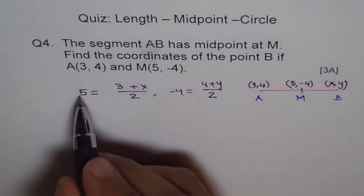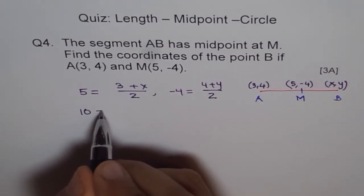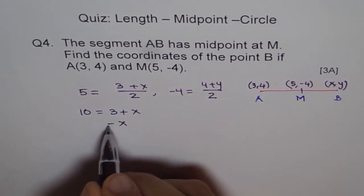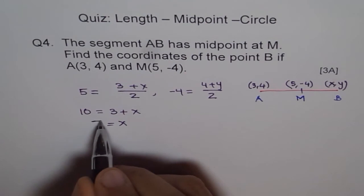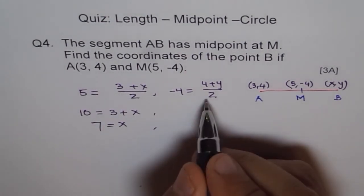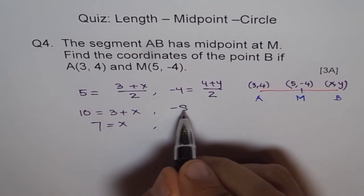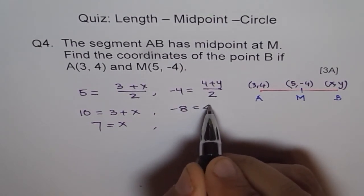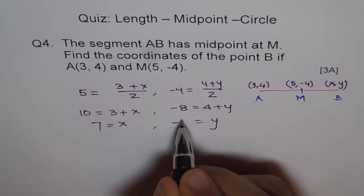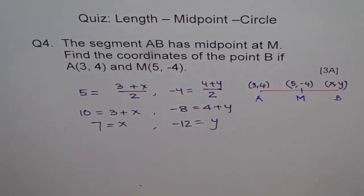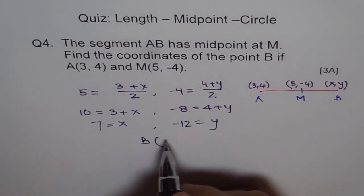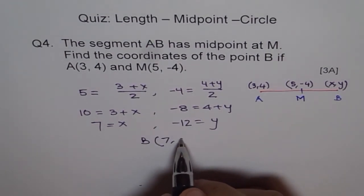Solve for X. So when you do cross multiply, you get 10 equals to 3 + X. And so X equals to 10 - 3, which is 7. Similarly here, we get 2 times -4, so -8 equals to 4 + Y and Y equals to -12. Do you see that? And therefore, our point B is (7, -12).